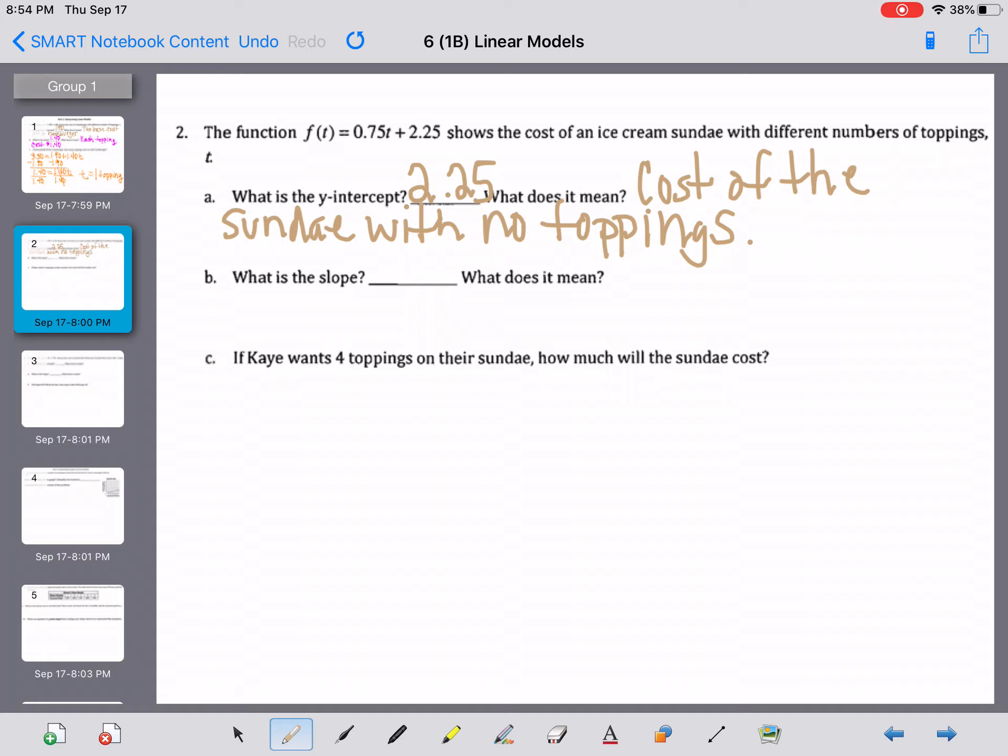So we found the y-intercept, and now we want to know what the slope is. Our other number here in the problem goes with our slope, and it's going to be 0.75. It's going to be the coefficient, the number in front of the t in this case. And what this means is that each topping cost 75 cents. 0.75, which by the way is 75 cents. It's a way of representing 75 cents.